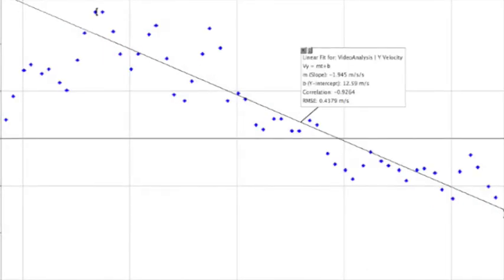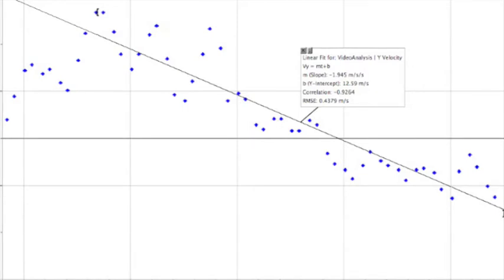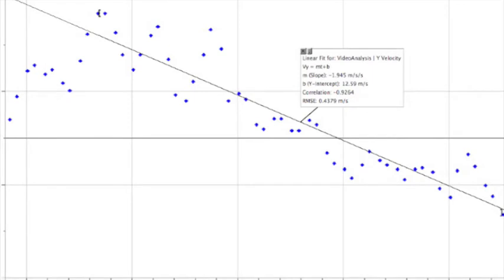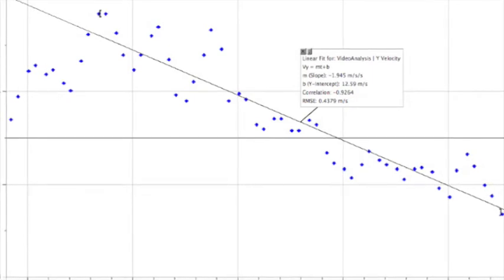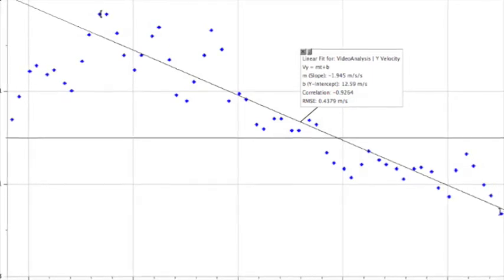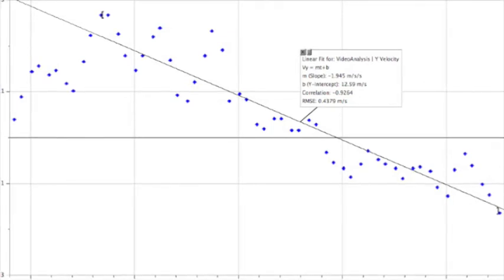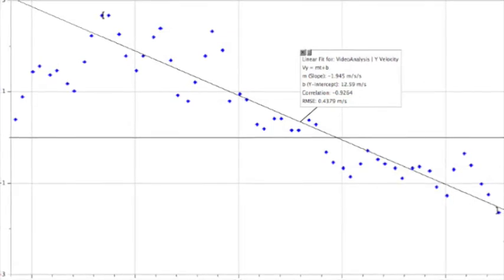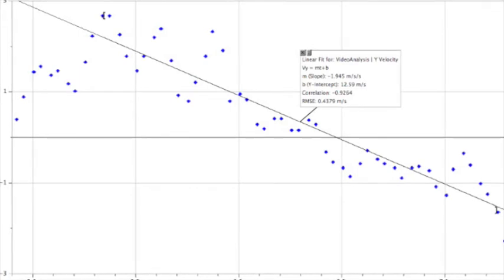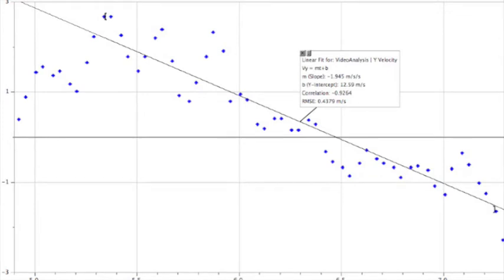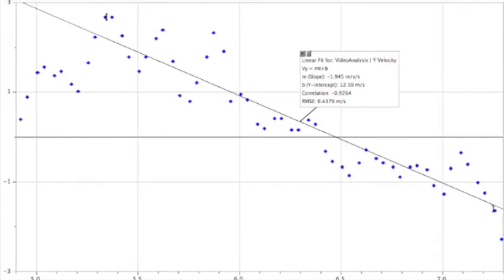Now here's a graph of his vertical velocity versus time. The slope of this graph should show us his vertical acceleration. We'd expect, if he's in free fall, that his vertical acceleration would be 9.8 meters per second squared downward. And he does show a vertical acceleration, but it's minus 2 meters per second downward. So he's not accelerating as quickly as he would if he were in free fall.